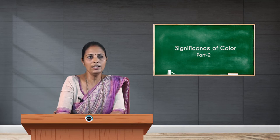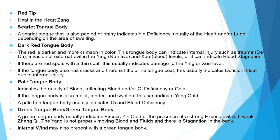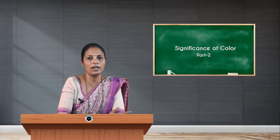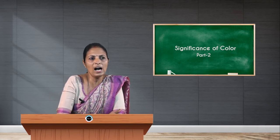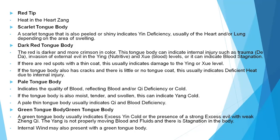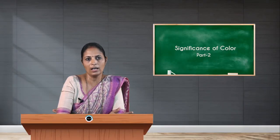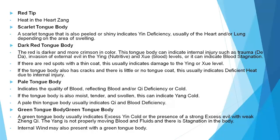A red tip of the tongue always indicates excess of the fire element or disturbed heart functions, and can also refer to emotional disturbances like anger, anxiety, or tension. A red tip also indicates excess of heat. A scarlet tongue that looks peeled or shiny indicates yin deficiency, usually involving heat or the lung, depending on the area of the swelling — whether it is on the lung area or over the heart area.